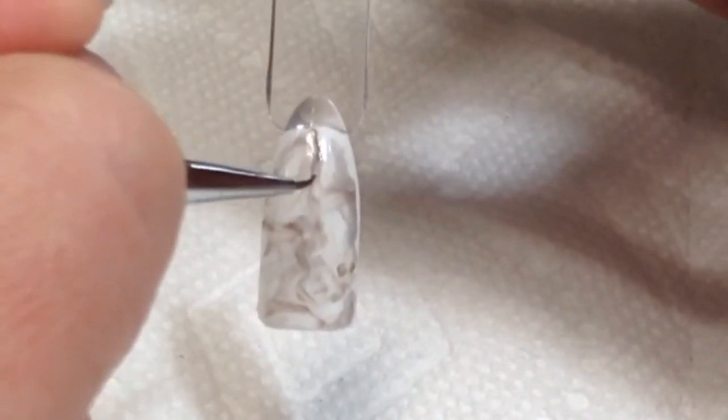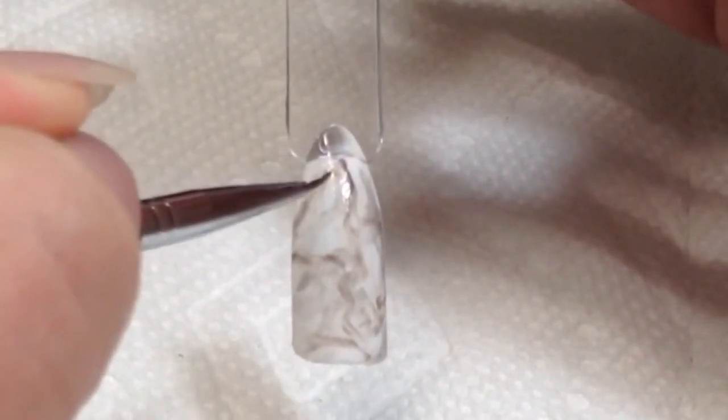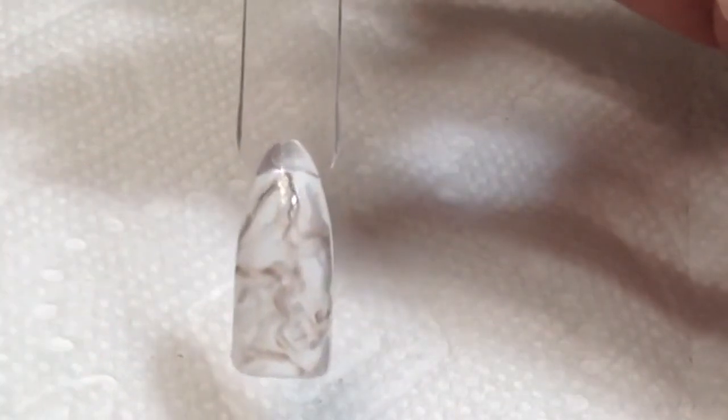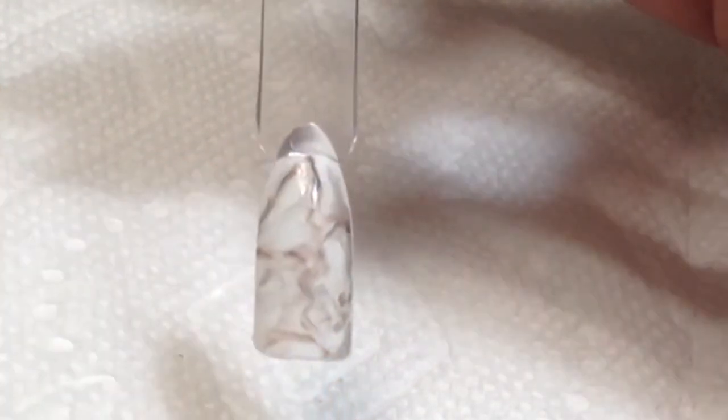Now finally you're going to add the darkest shade of gray. I felt that mine was too dark so I actually mixed it with some of the medium shade, but you just add some very thin squiggly lines here and there.